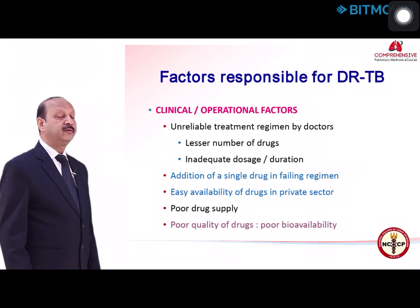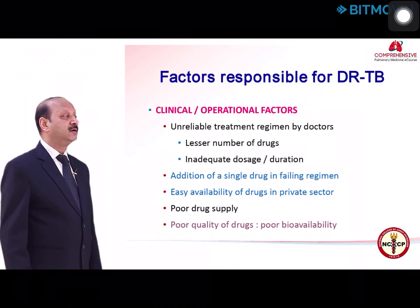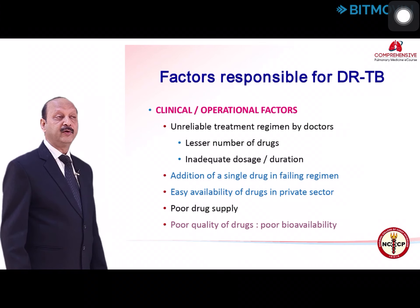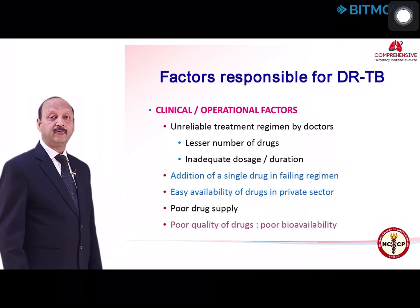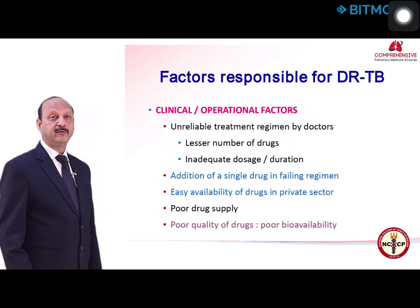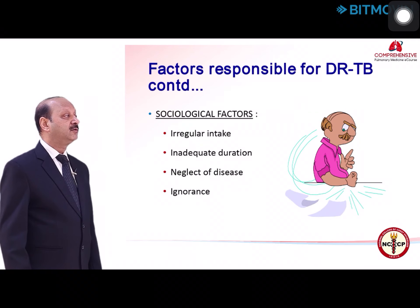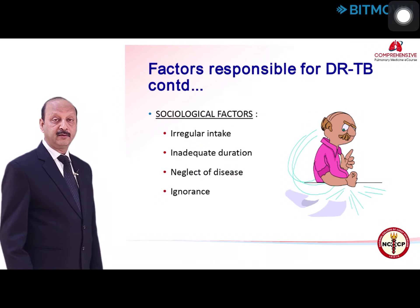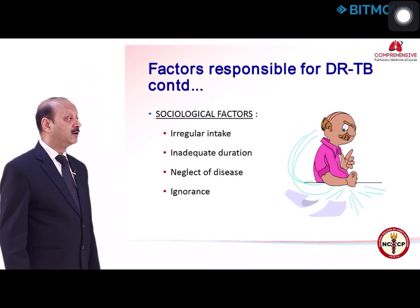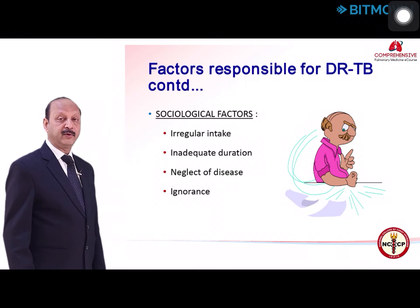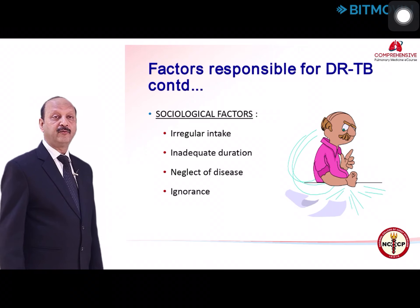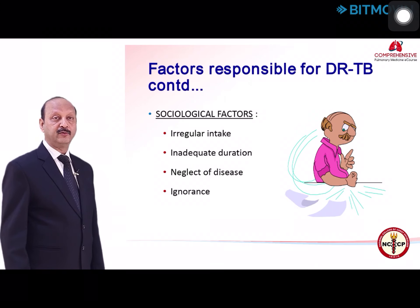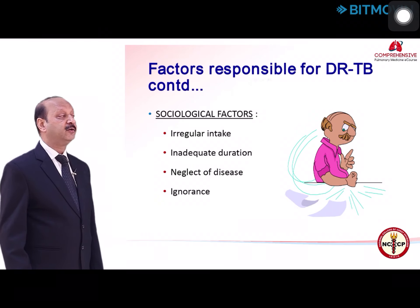Poor quality of drugs is another important factor, especially poor bioavailability. Whenever we combine INH and rifampicin, the rifampicin bioavailability could be reduced, so one should be careful when giving a combination in a single tablet. There are also sociological factors: patients tend to take drugs irregularly, stop drugs prematurely, neglect the disease, or are ignorant of why they should take drugs regularly. We need to counsel and educate them.